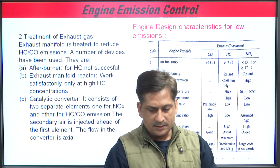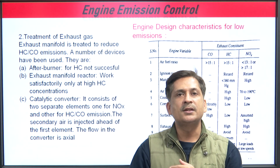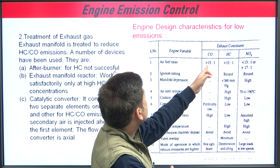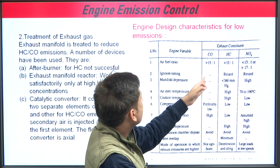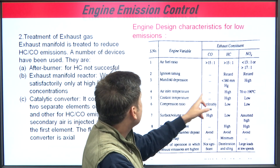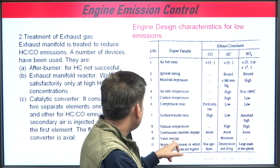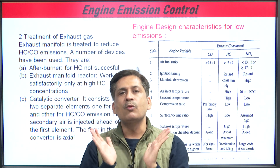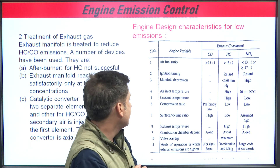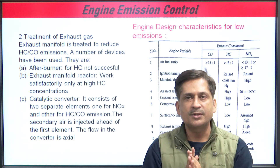The afterburner and exhaust manifold reactor are treatment processes to reduce hydrocarbon, CO, and NOx emissions. Engine design characteristics for low emissions include: air-fuel ratio in the proper range, retarded ignition timing reduces HC and NOx, and valve overlap — the period when both inlet and exhaust valves are open simultaneously. Reducing valve overlap lowers hydrocarbon emissions.